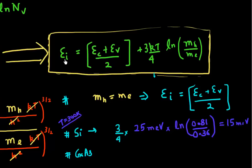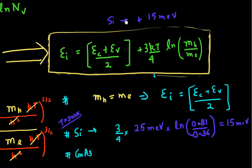So what this says is that my intrinsic energy level is located at the mid-band gap plus a value of 15 milli-electron volts for the case of silicon.